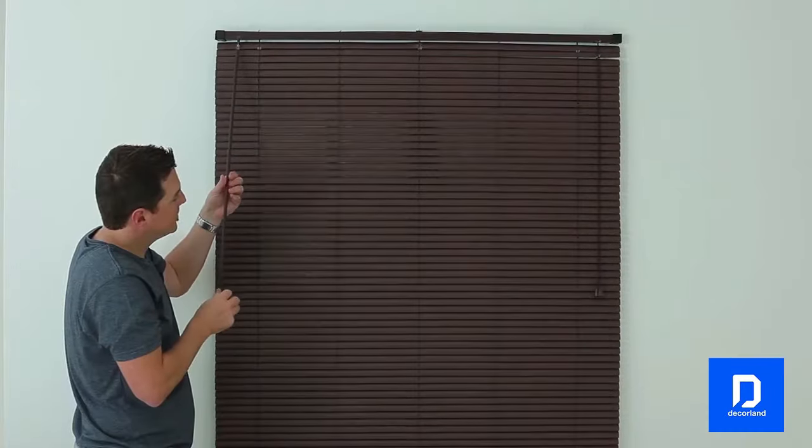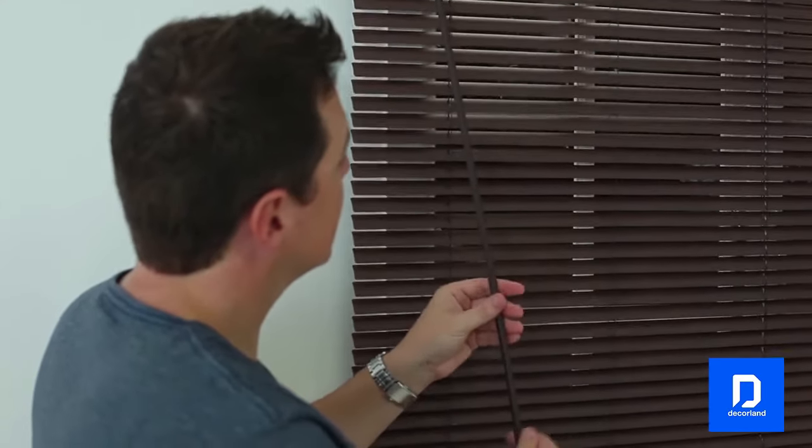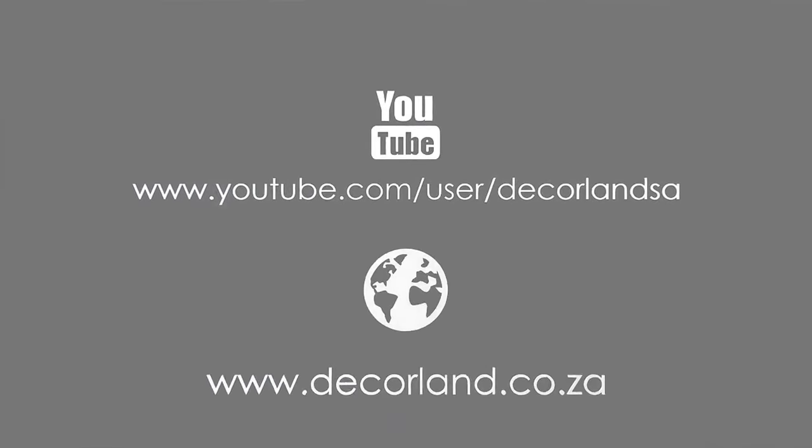To adjust slat position, rotate the tilting wand to tilt the slats to the desired angle.